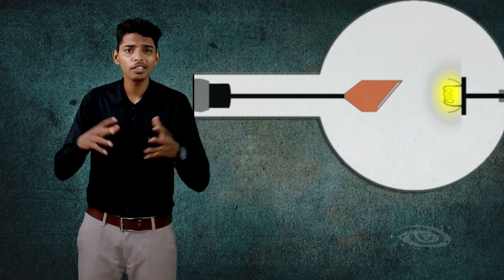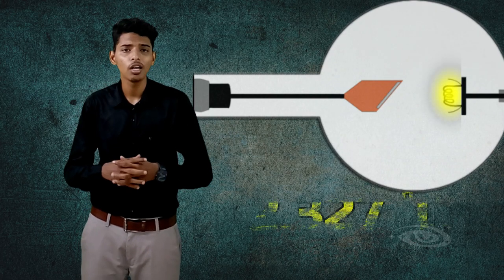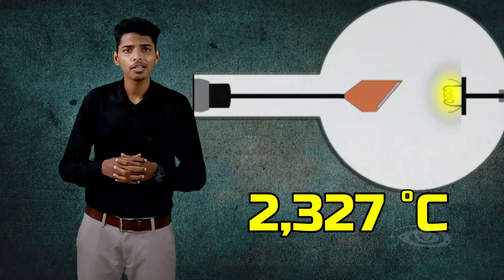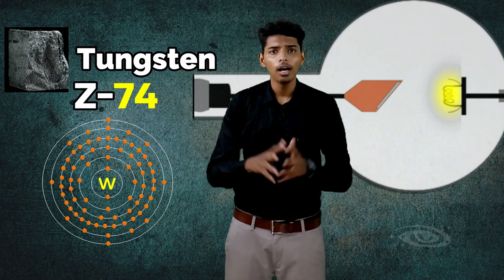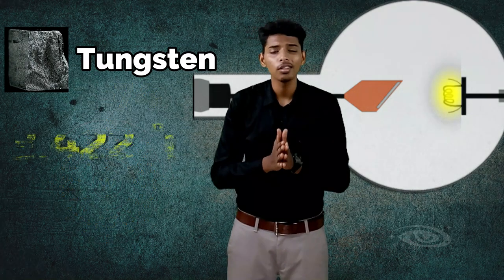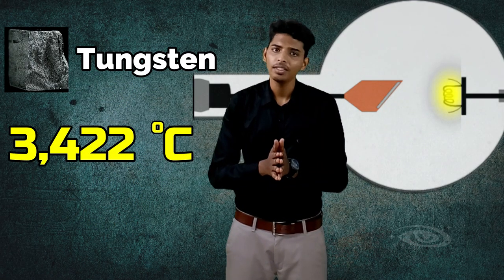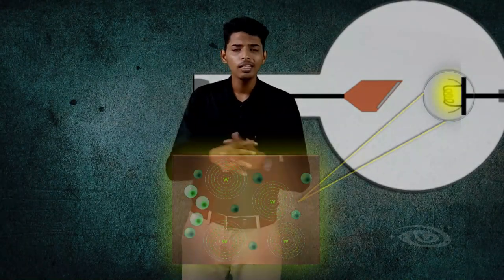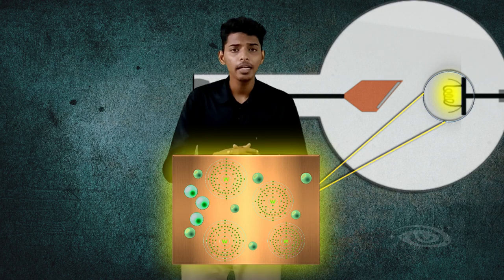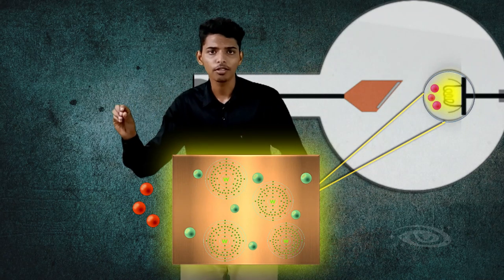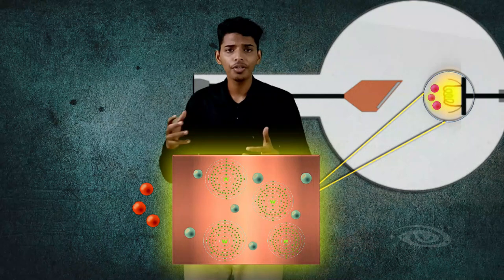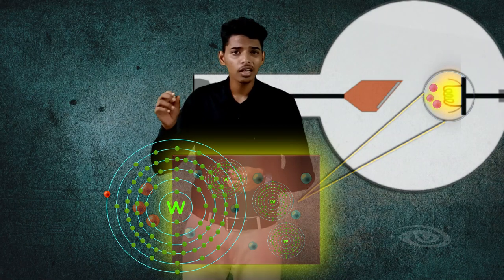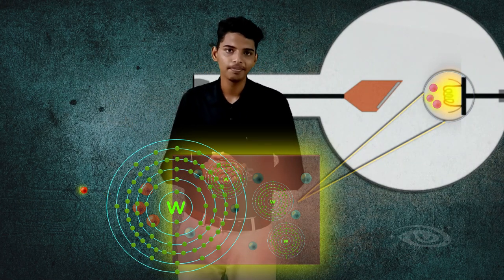When we give a tube current — that is, mA — to the cathode, the cathode filament gets heated to a high temperature. The thermionic emission temperature is 2327 degrees Celsius. To withstand this high temperature, we use tungsten because it has a high atomic number of 74 and a high melting point of 3422 degrees Celsius. The free electrons inside the metal gain kinetic energy and come out from the metal surface. Increasing the tube current causes more heat, causing outer electrons to come out as well.